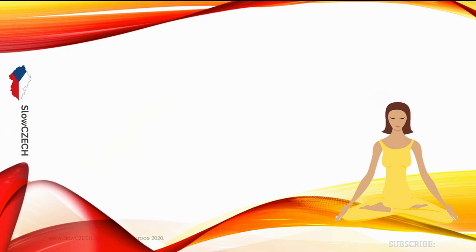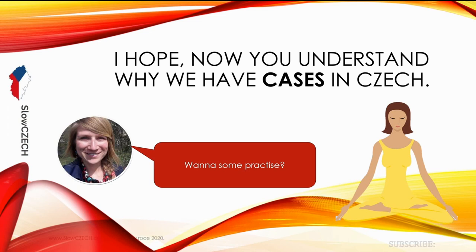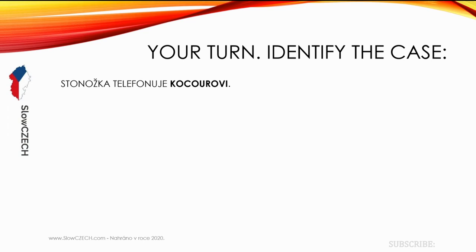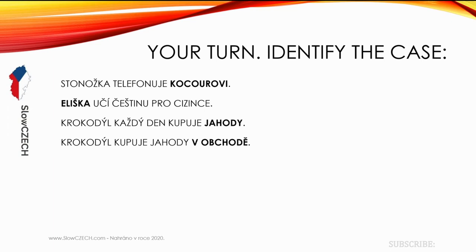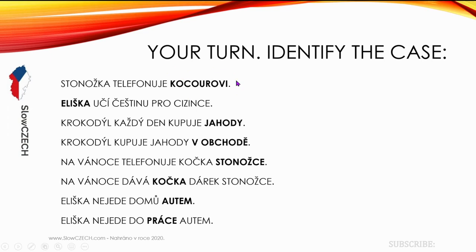I hope you understand a bit now why we have cases and got the logic of those seven cases. Now it's your turn — you can try to identify the cases. Look at these sentences, pause the video, and try to say which case is used. For example, the first one: 'Stonožka telefonuje kocourovi.' Which case is 'kocourovi'? Is it dative? Locative? Nominative? Pause the video and see you in five minutes.